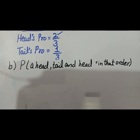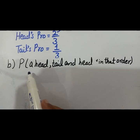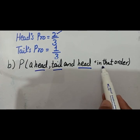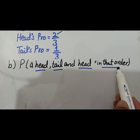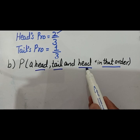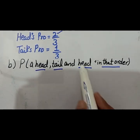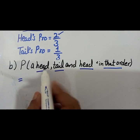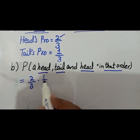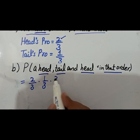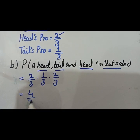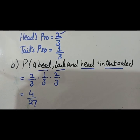Moving to part two: find the probability of a head, tail, and head in that order. This means head on the first toss, tail on the second toss, and head on the third toss — you must not disturb this sequence. The probability of head is 2 by 3, probability of tail is 1 by 3, and probability of head again is 2 by 3. So the answer is 4 by 27. There is no need to simplify the fraction in probability.